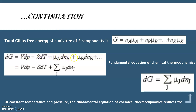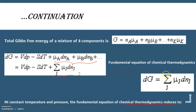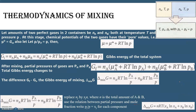We already know dG = VdP − SdT + μₐ dnₐ + μ_b dn_b + … + μₖ dnₖ, which can be written as dG = VdP − SdT + Σⱼ μⱼ dnⱼ. At constant temperature and pressure this reduces to dG = Σⱼ μⱼ dnⱼ.